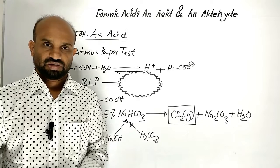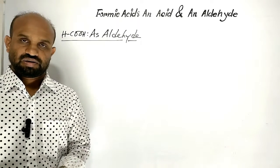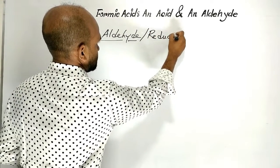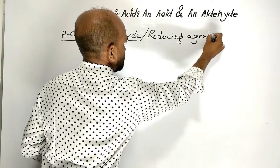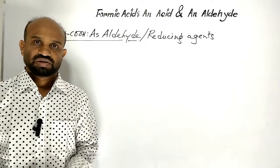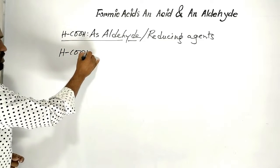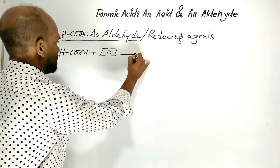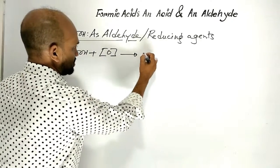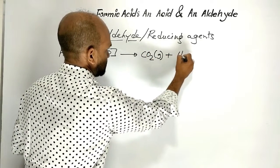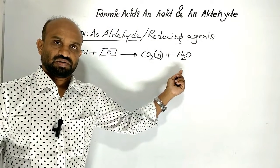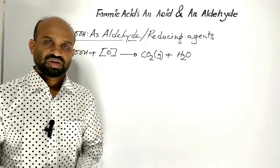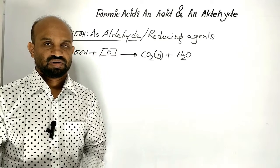Now let's see the aldehyde nature of methanoic acid — methanoic acid as aldehyde. Aldehydes are reducing agents. Methanoic acid reacts with an oxidizing agent and itself gets oxidized to carbon dioxide gas and water. This means methanoic acid acts as a reducing agent. Like aldehydes, methanoic acid reduces Tollens' reagent and Fehling's solution. Let's see the reactions.